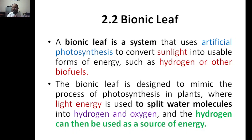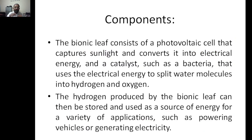The bionic leaf is designed to mimic the process of photosynthesis in plants, where light energy is used to split water molecules. Hydrogen is produced and oxygen is released as a byproduct — just as we saw in the previous class. The hydrogen being produced can then be used as a source of energy.